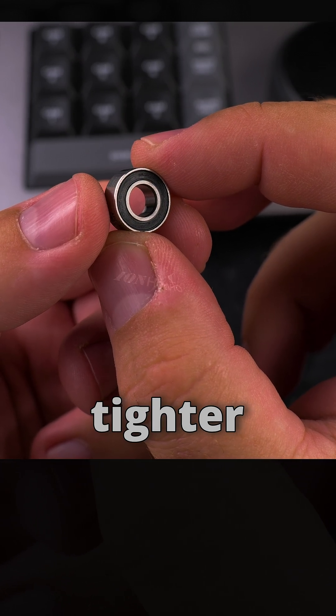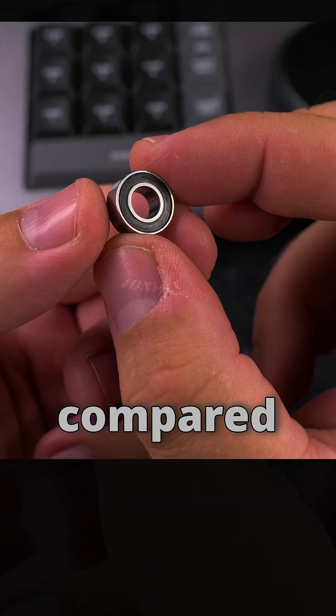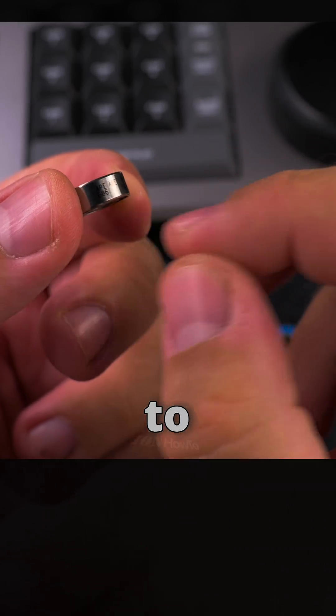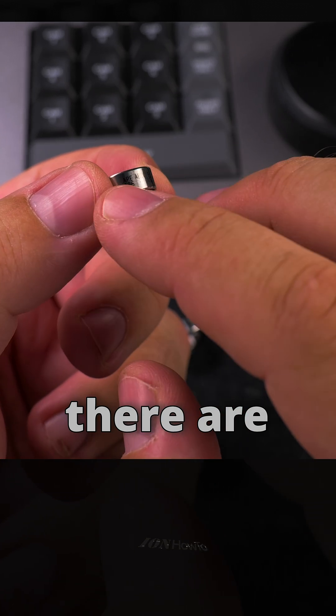ABEC 9 should be with the tighter tolerances, so there should be less play in them compared to 7. But who knows these things? I don't really know much. I just was reading about them. First I ordered the blue ones and then I realized that there are better versions.